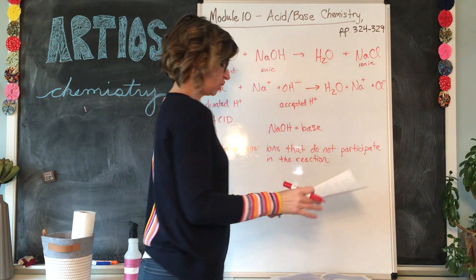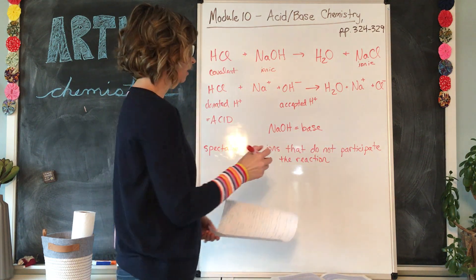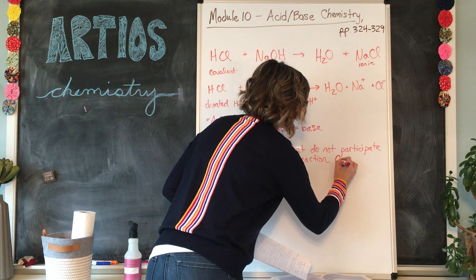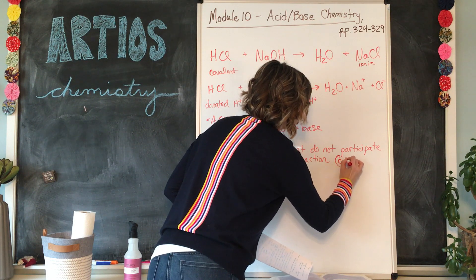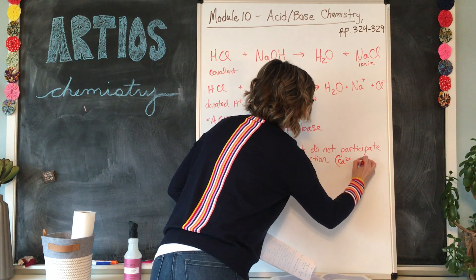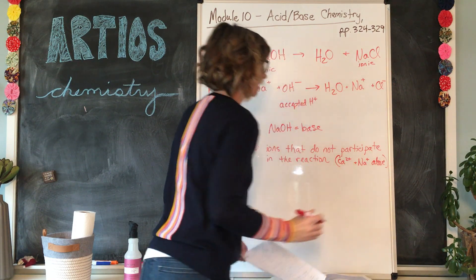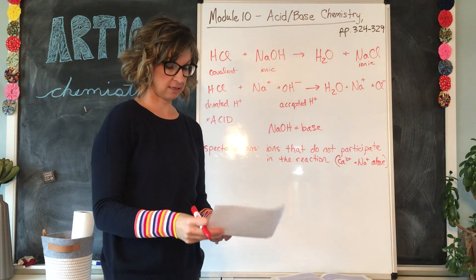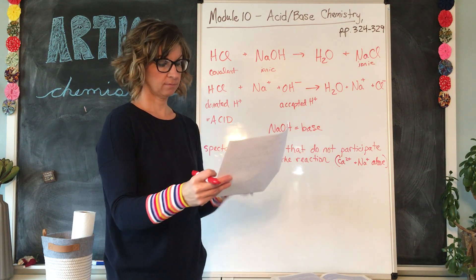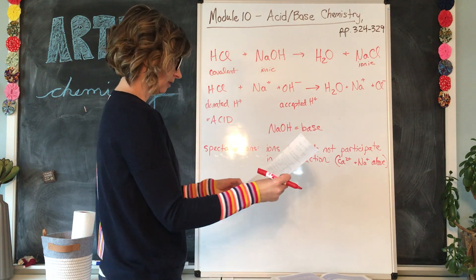So in the two examples that we just did, we saw Ca2+ and Na+ in the above examples were both spectator ions.